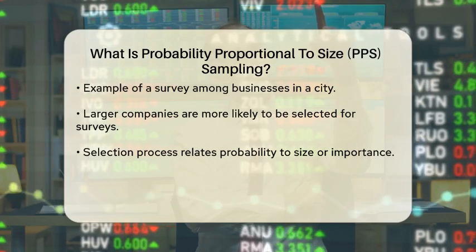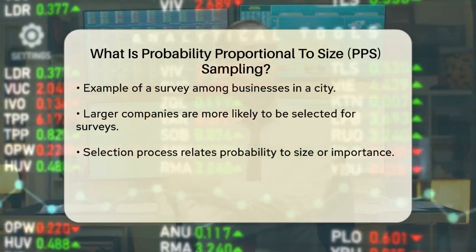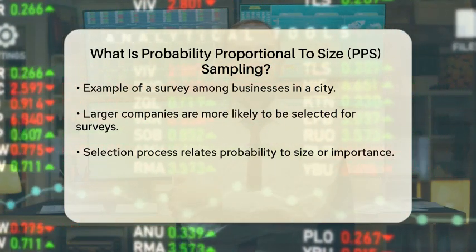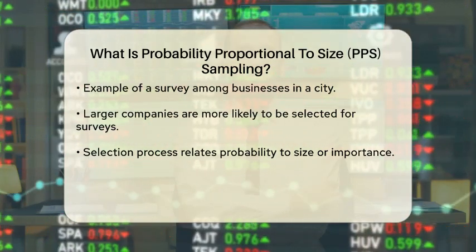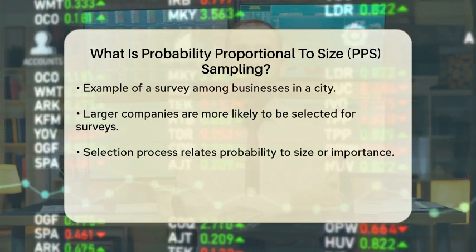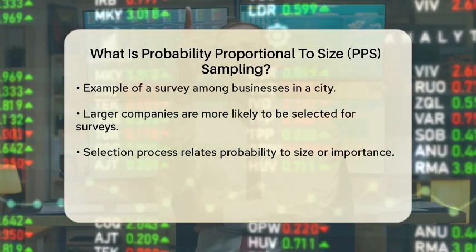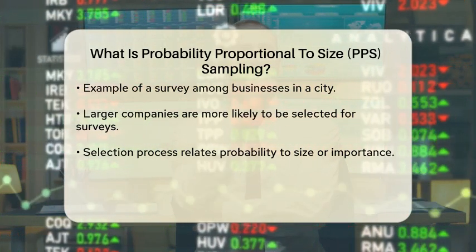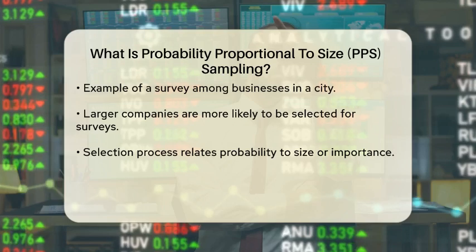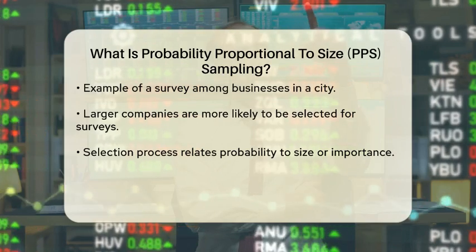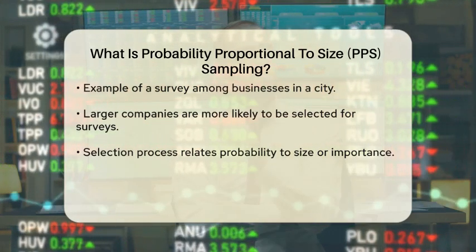For example, consider a survey conducted among businesses in a city. If larger companies contribute more to the local economy, they would be more likely to be chosen for the survey compared to smaller businesses. The selection process is designed so that the probability of selecting a business is directly related to its size or importance.